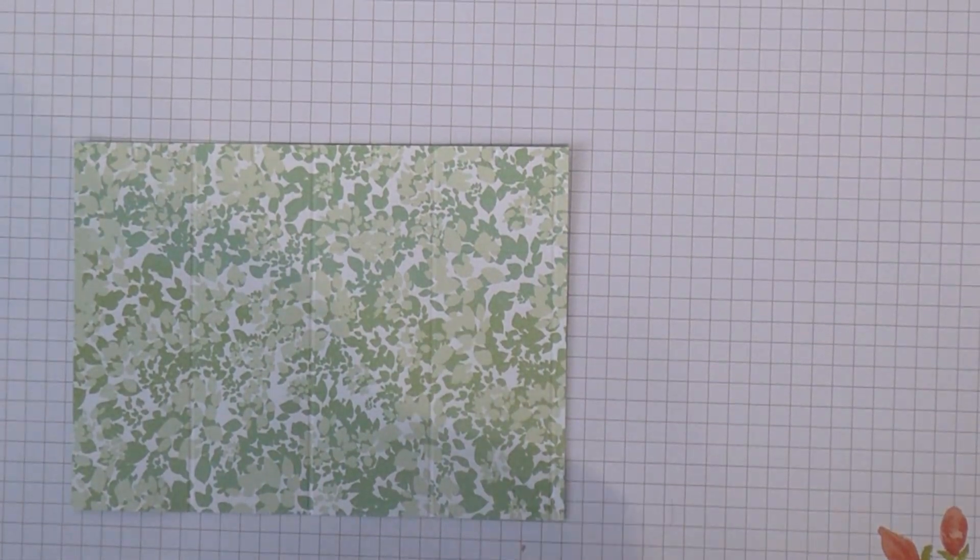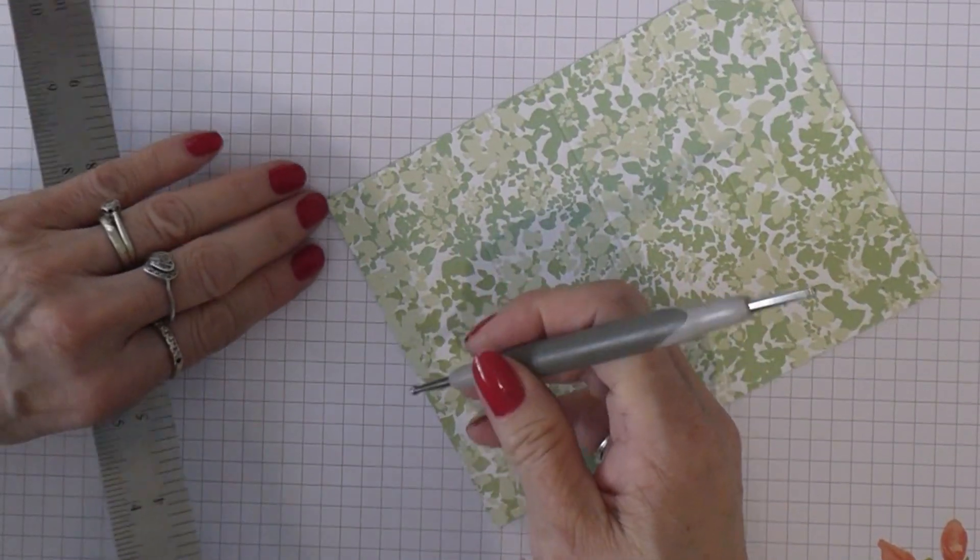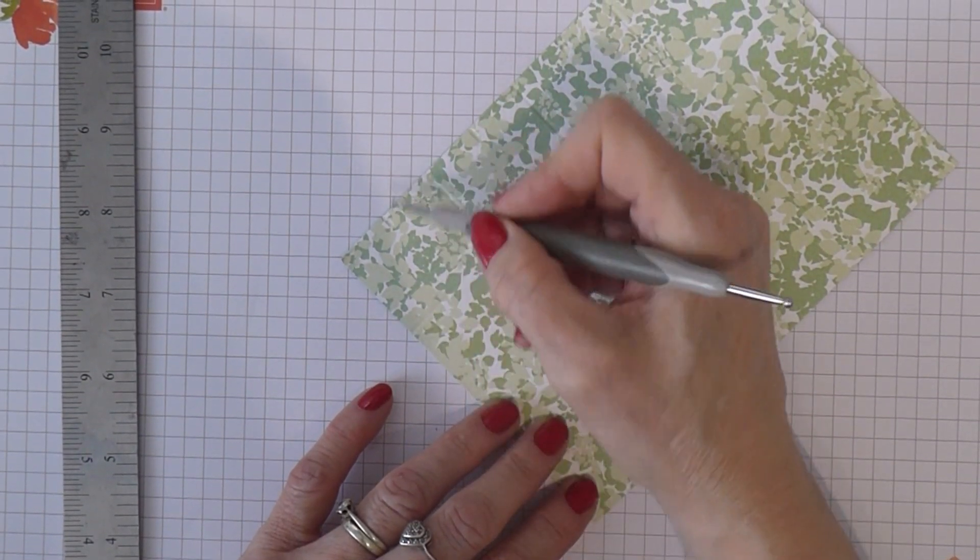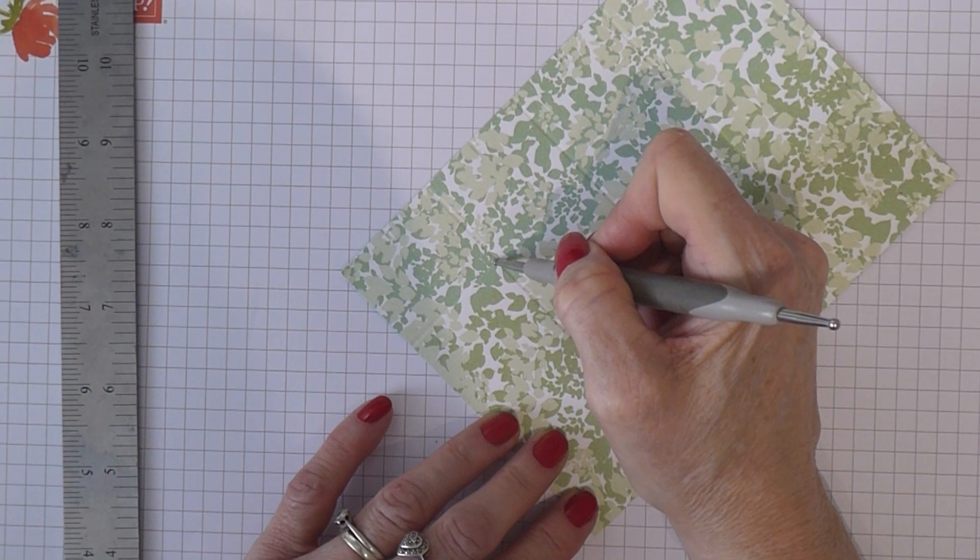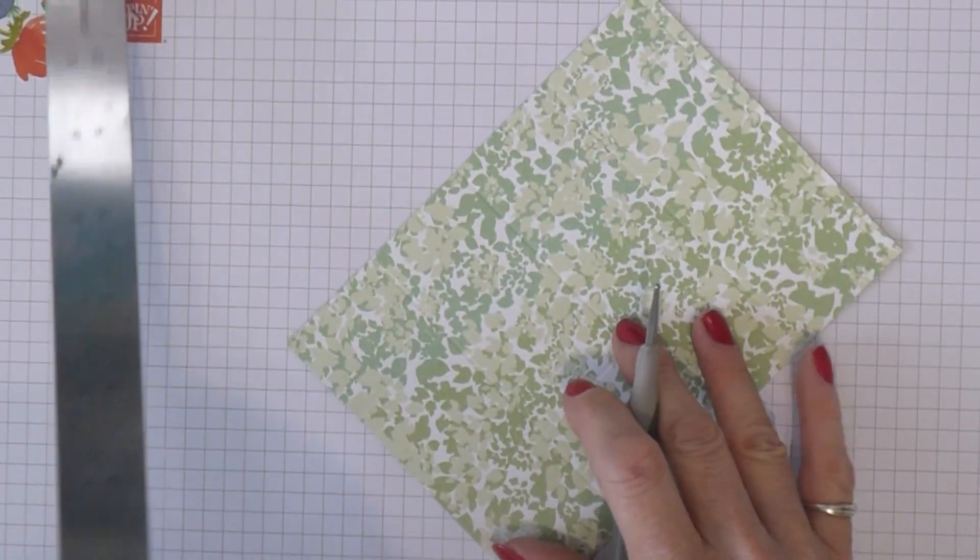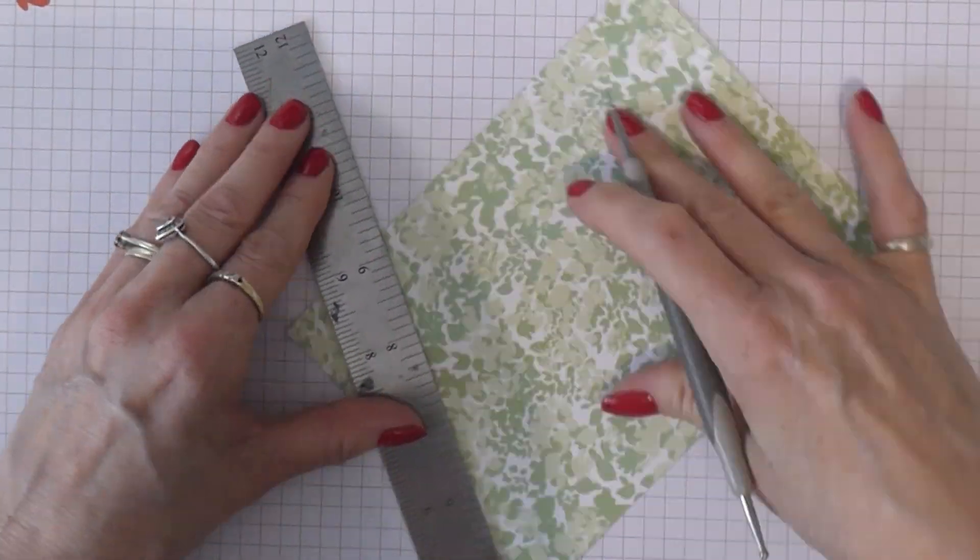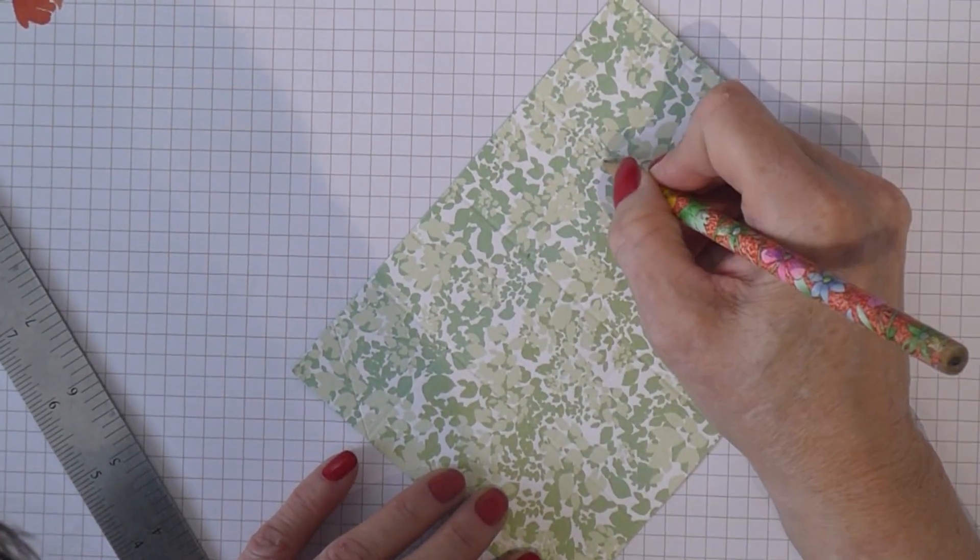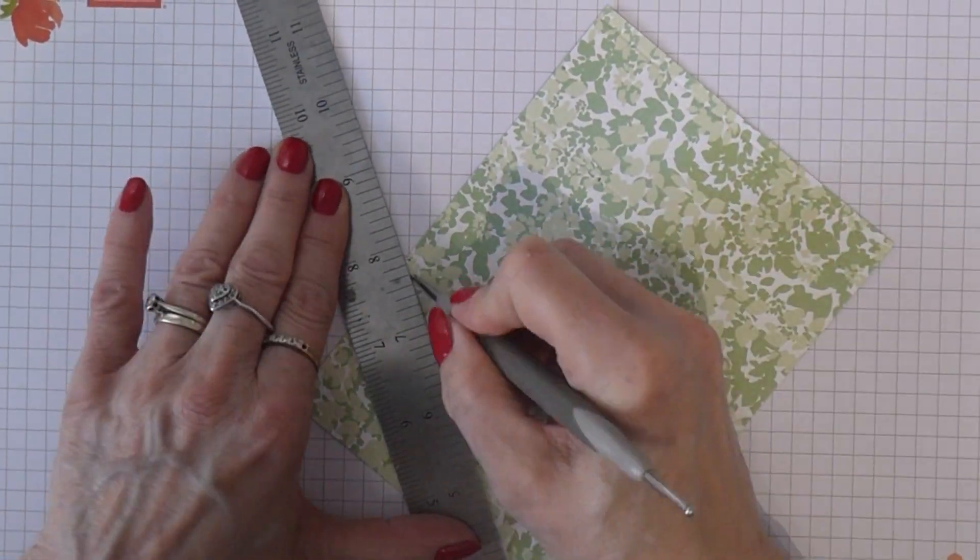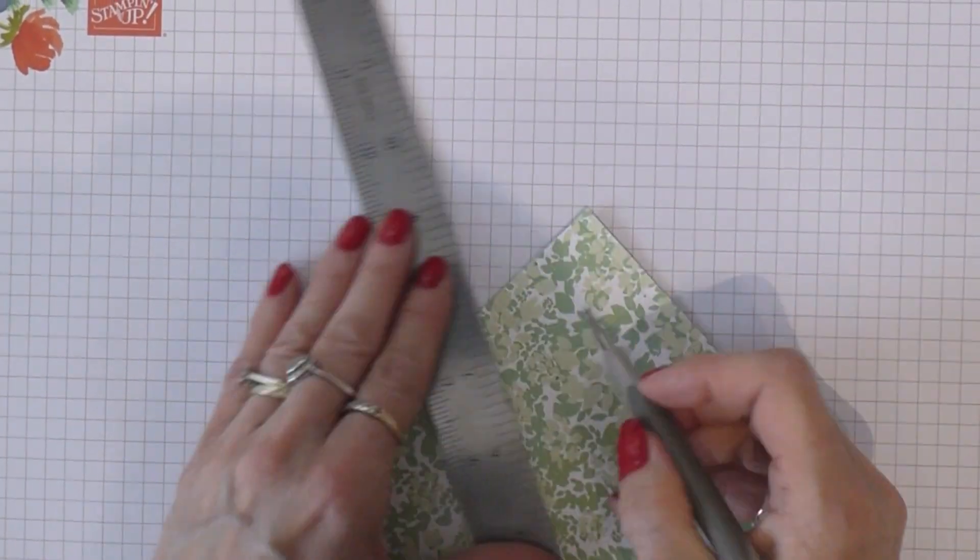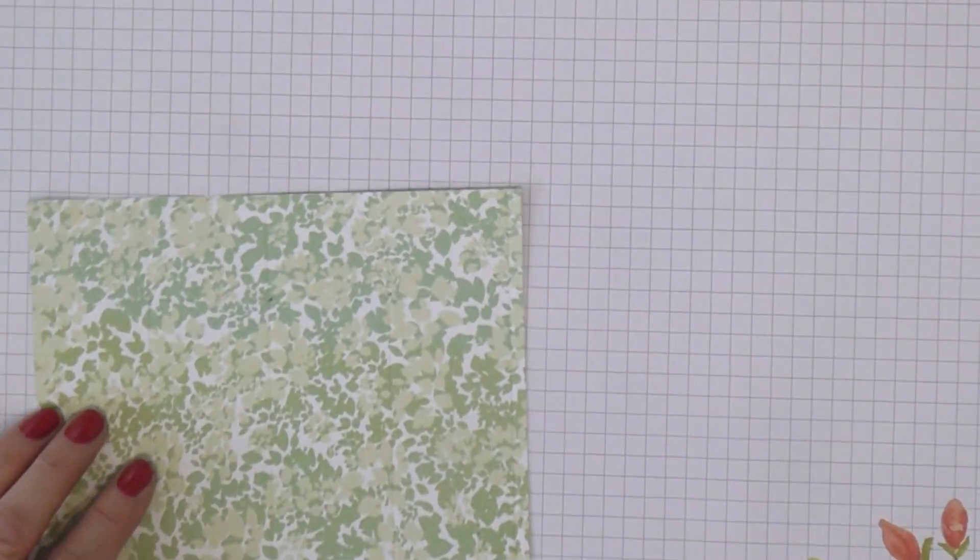Then you're just going to need a ruler and make some score lines in a zigzag fashion here. So you're going from this corner to your notch and back down to this corner and then all the way along.